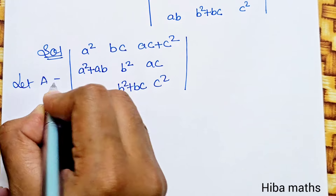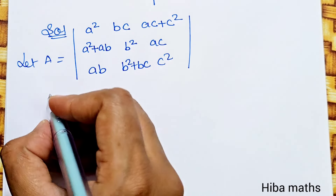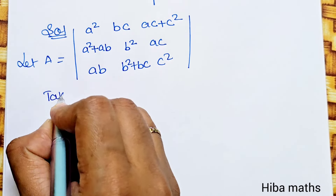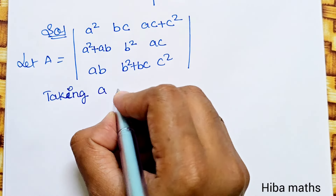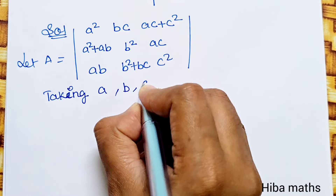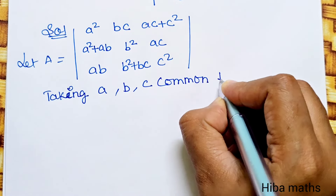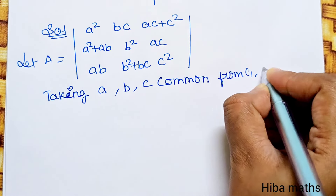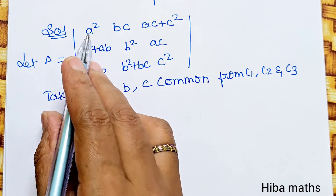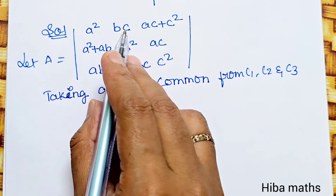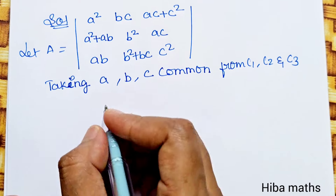Let A equal a determinant. Taking A, B, C common from C1, C2, and C3 respectively — C1 is A common, C2 is B common, C3 is C common. Clear!